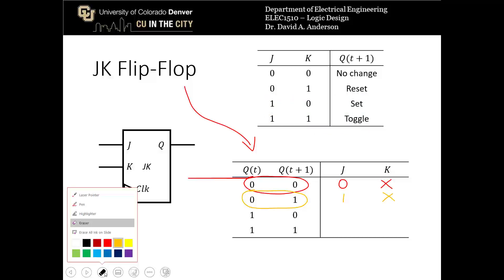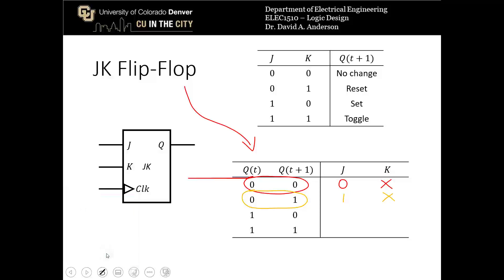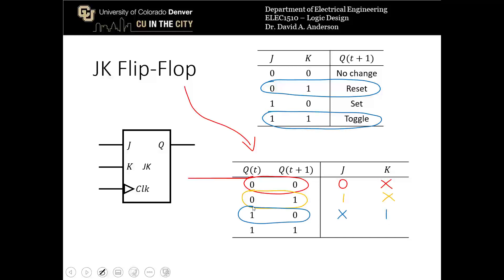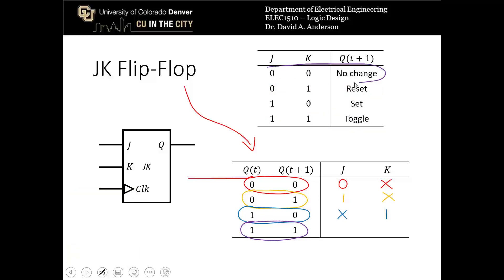For the transition from 1 to 0, this can either be a reset condition or a toggle condition. That means for J we don't care what its input is, and for K the input has to be 1. For the last transition from 1 to 1, that's either a no-change or set condition, so we don't care about J but K has to be 0.